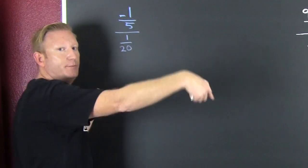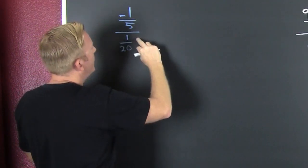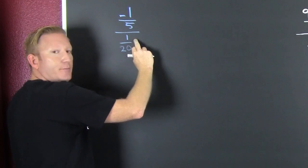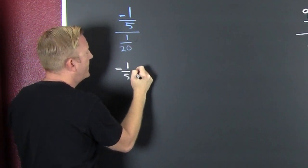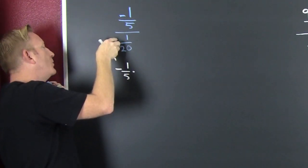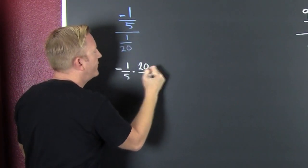You gotta flip it before you multiply. Which one are you flipping? The one you're dividing by, because dividing by a fraction, multiplying by the reciprocal. That's a minus one-fifth times the reciprocal of one over 20 is 20 over one. Fun.